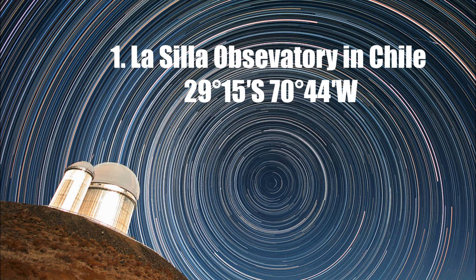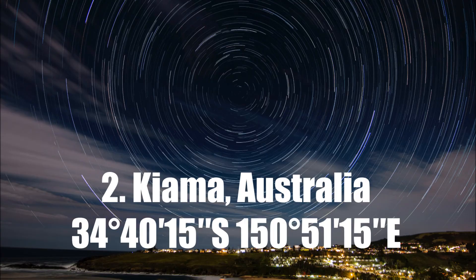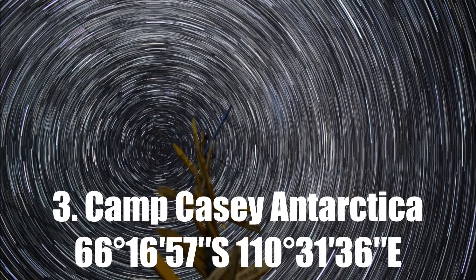The three locations are: Number one, La Silla Observatory in Chile, 29 degrees south, 7 degrees west. Number two, Kiamma, Australia, 34 degrees south, 150 degrees east. Number three, Camp Casey, Antarctica, 66 degrees south, 110 degrees east.